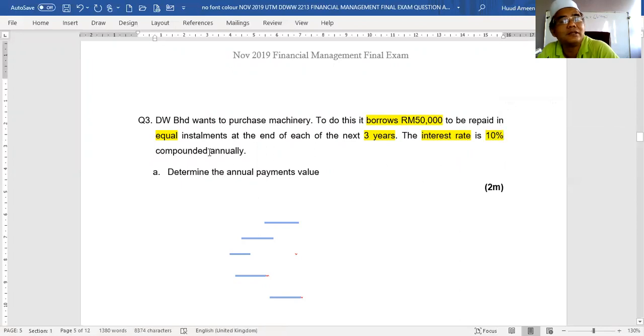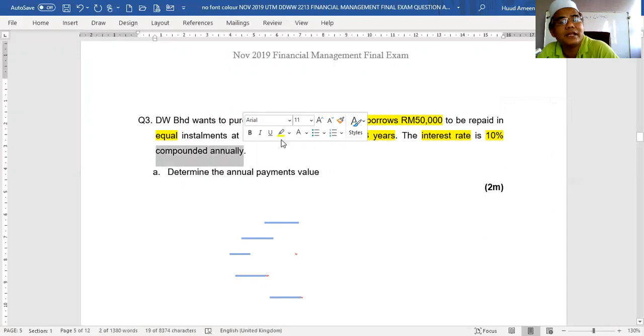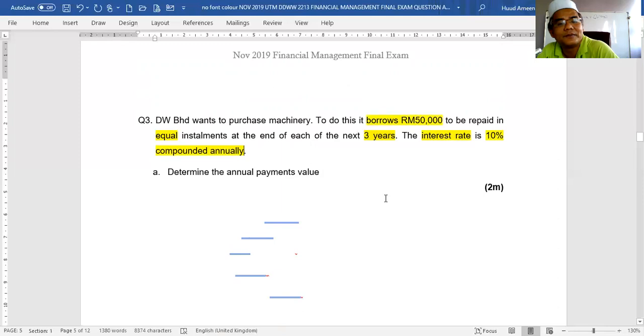Compounded annually. What is the meaning of compounded annually? The interest is calculated once a year. If quarterly, the interest will be divided by 4. If annually, no need to divide. And then the first question, question number 3, determine the annual payment value.